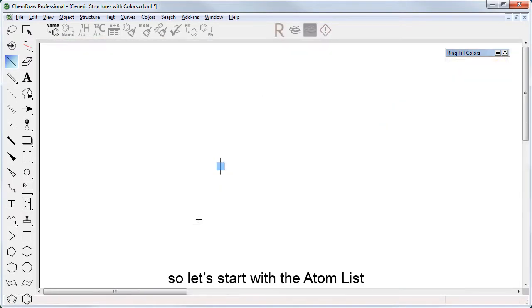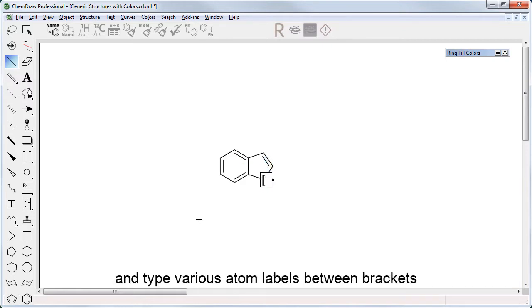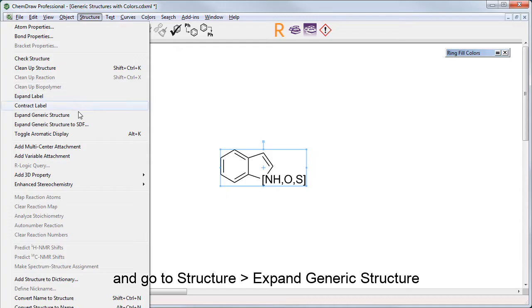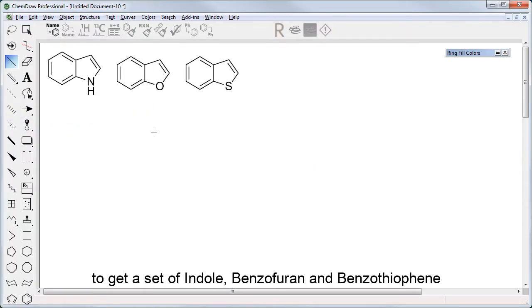You start the text tool over an atom and type various atom labels between brackets comma separated. You then select the structure and go to Structure, Expand Generic Structure to get a set of indole, benzofuran, and benzothiophene.